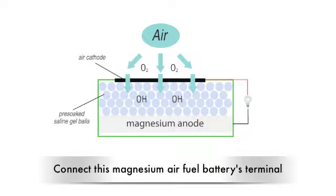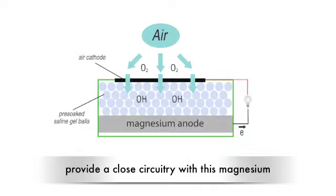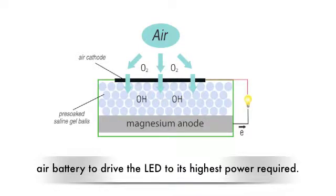Connect this magnesium air fuel battery's terminals to an LED light circuitry. The load will then provide a closed circuitry with this magnesium air battery to drive the LED to its required power.